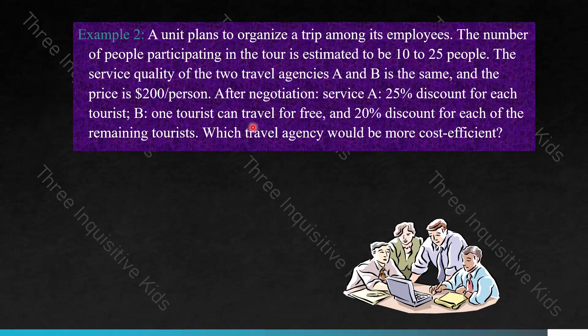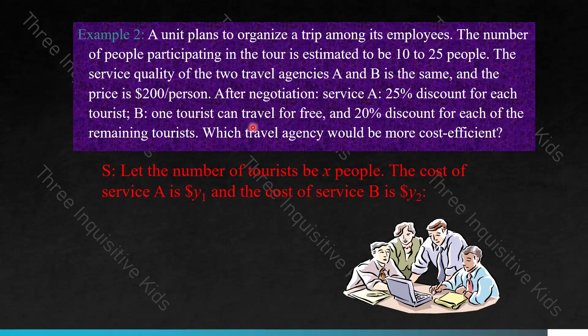Pause the video and try to solve this using the steps from the previous problem. Let the number of tourists be X, the cost of service A be Y1 dollars, and the cost of service B be Y2 dollars. We use linear functions to represent each agency. For Y1 (service A), the cost is 200 times 0.75 times X, since the 25% discount means multiplying by 0.75. Simplified, Y1 equals 150X.